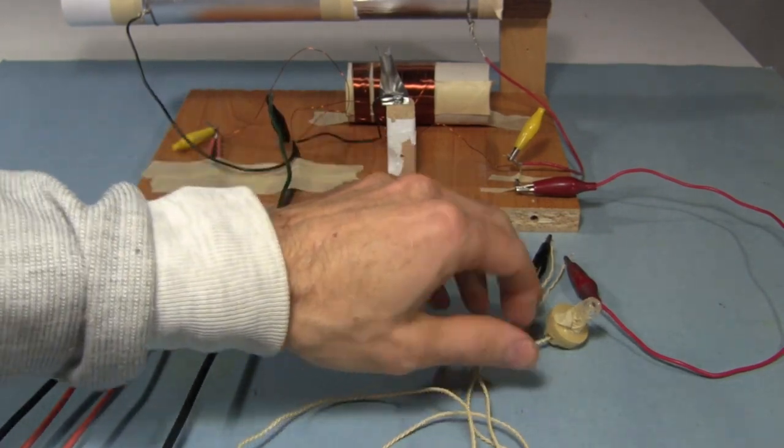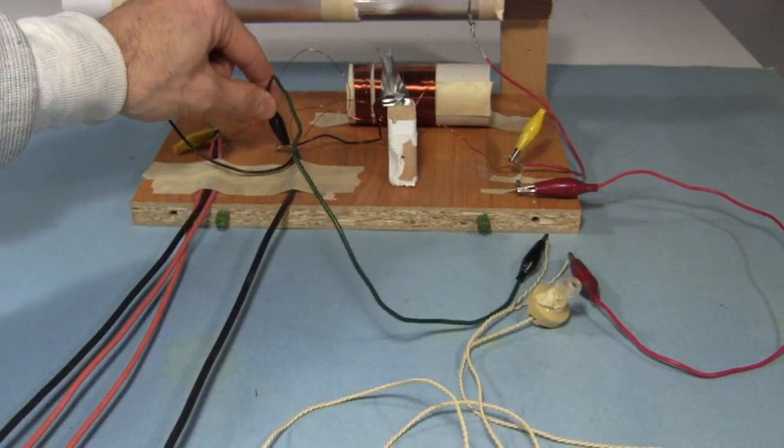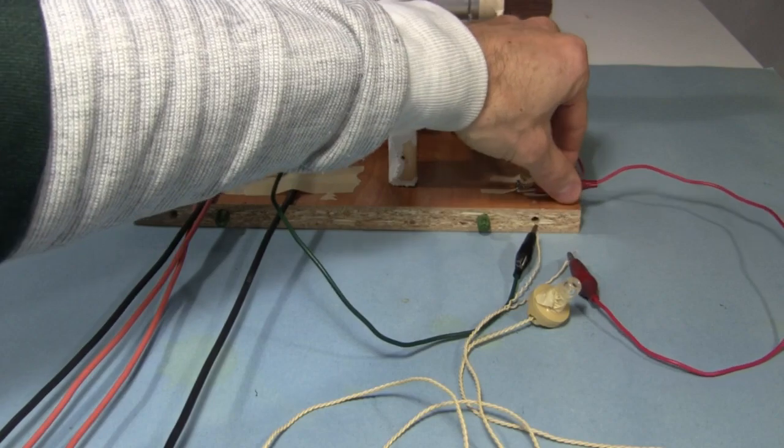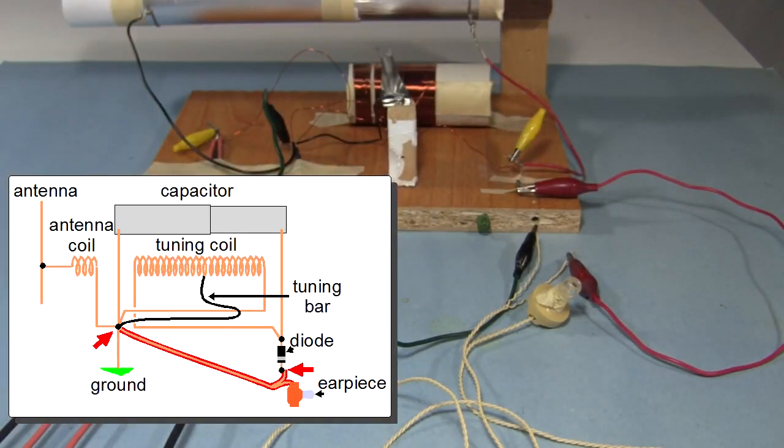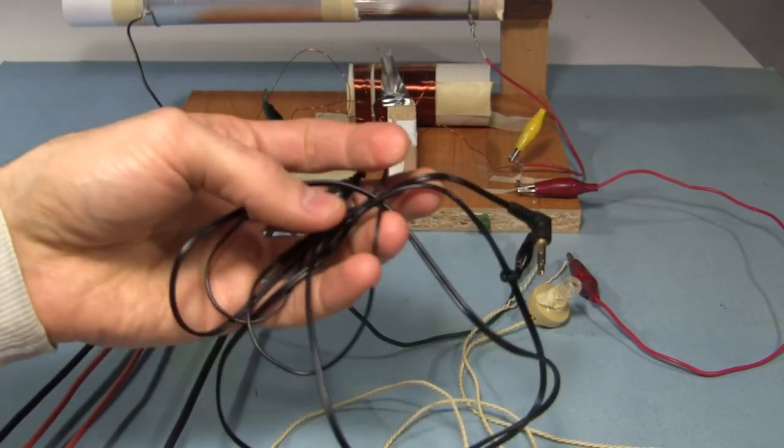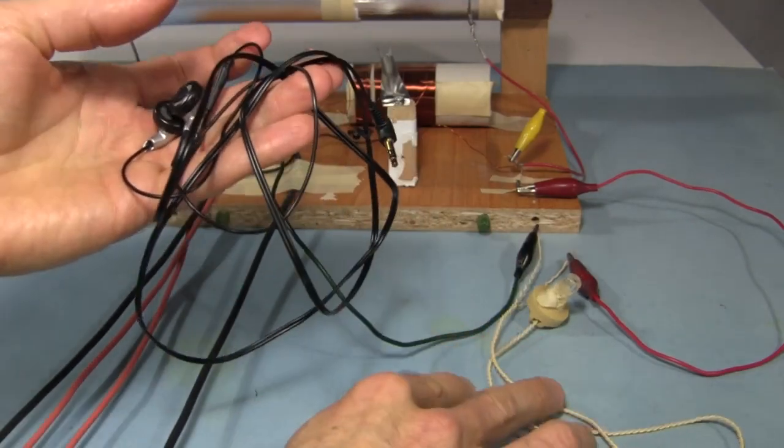This is where a crystal radio earpiece normally connects. One side to the ground and one side to the diode from the crystal radio. But it's not just a simple matter of taking your earbuds and putting them in place of the earpiece.